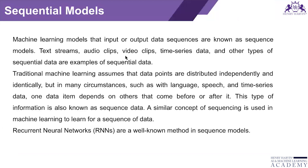Types of sequential data include text strings, audio clips, video clips, and time series data. Time series data is based on timestamps — for example, weather, sales, share market data, airlines data, and train data — which is changing from second to second, minute to minute, time to time. These are time-based data which occur in a series.